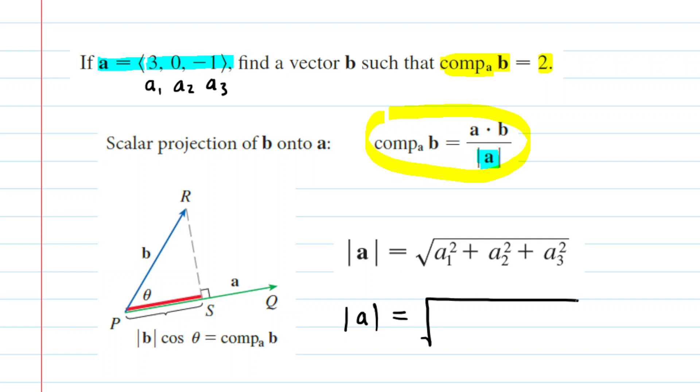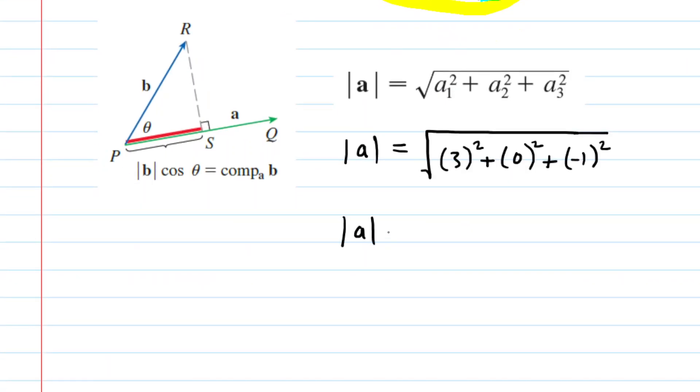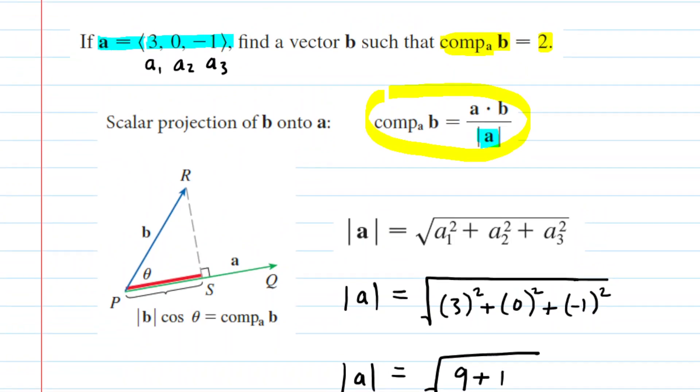Let's go ahead and plug in the given values of A1, A2, and A3. So we've plugged in those components, and then we just want to simplify underneath the square root. We have the square root of 9 plus 0 plus 1, so of course the magnitude of vector A is equal to the square root of 10.